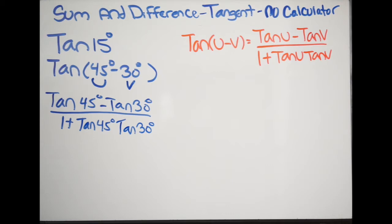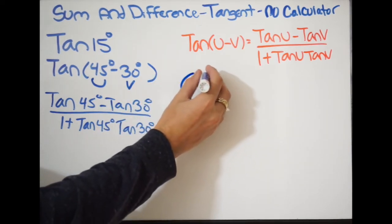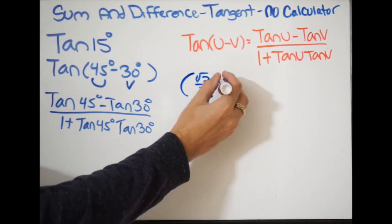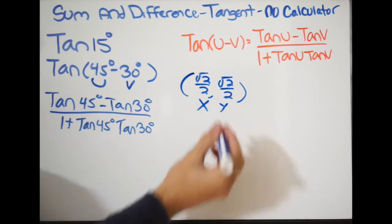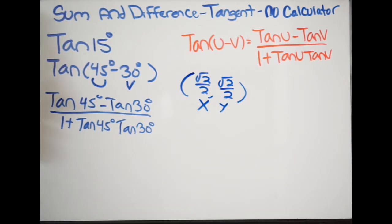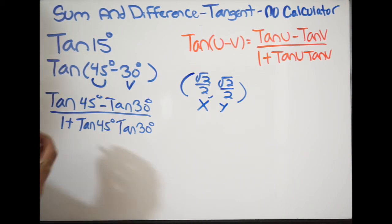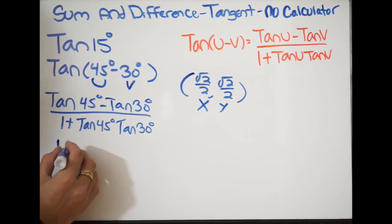We need to determine what these values are, using the unit circle. At 45 degrees, the x and y values are both square root of 2 over 2. Since tangent is y over x, doing y over x here simply gives us 1. So tangent of 45 degrees is 1, and we get 1 minus...